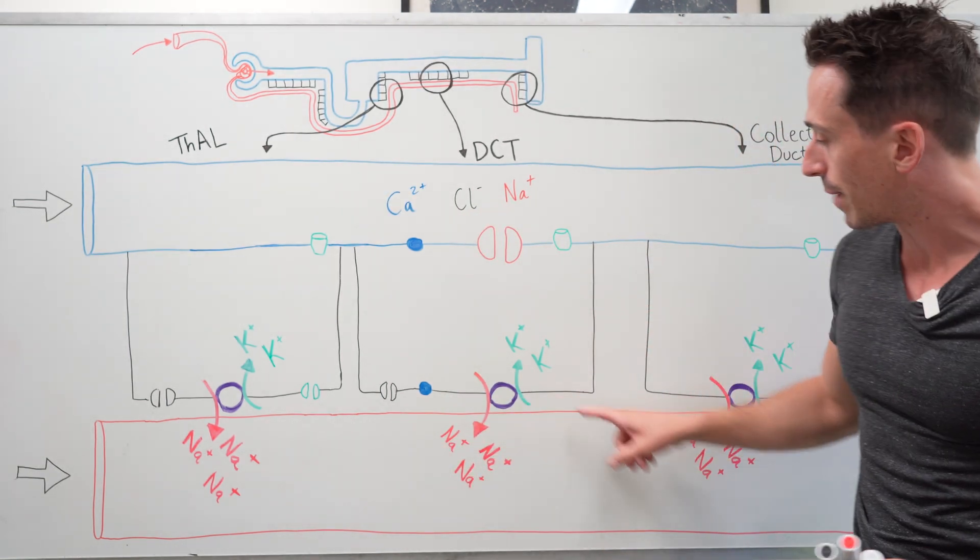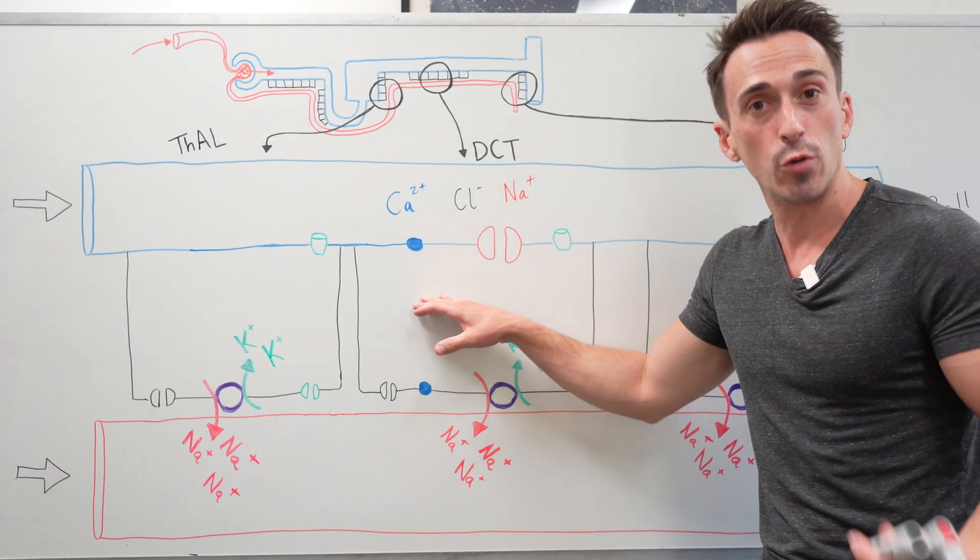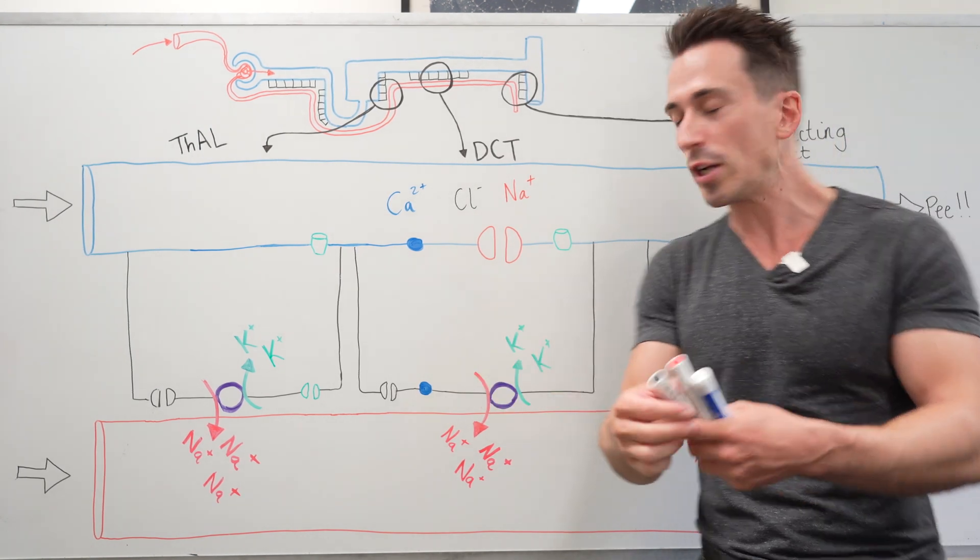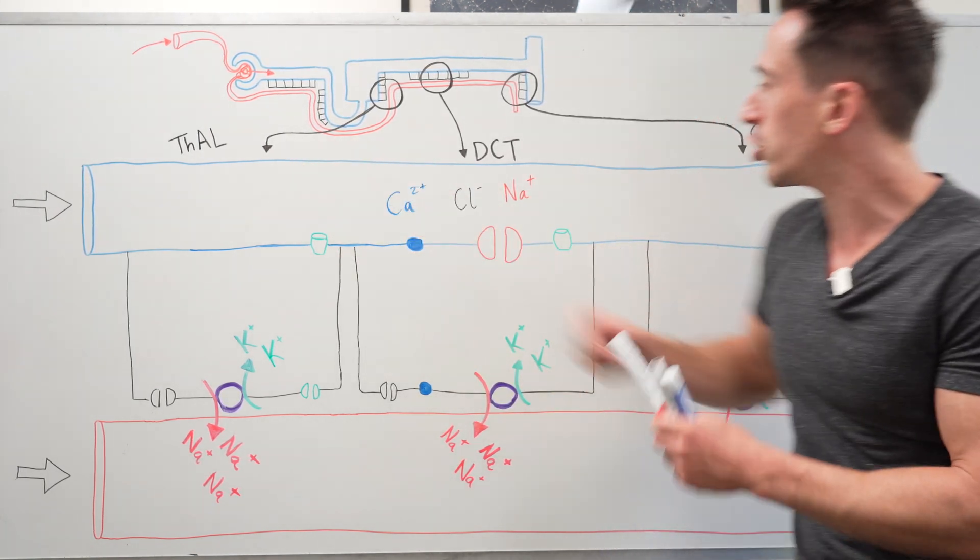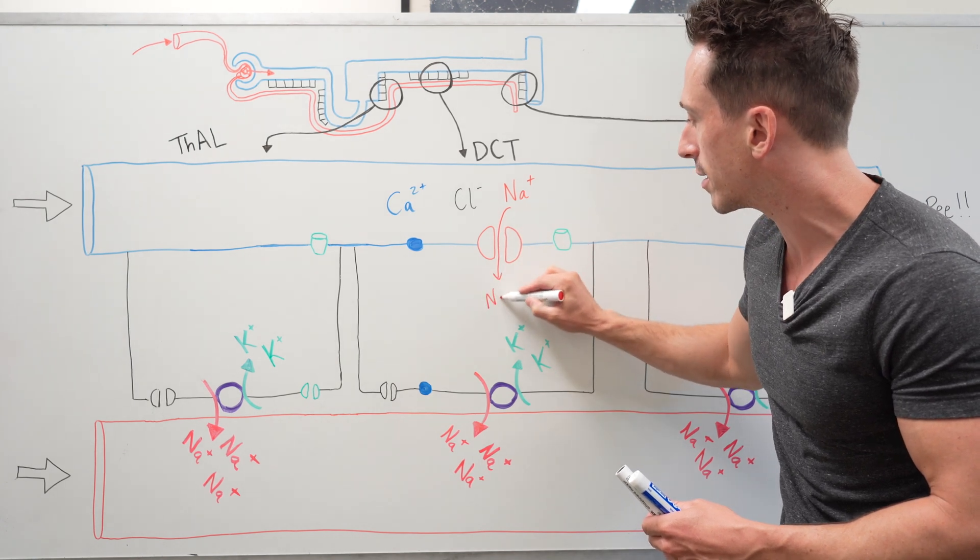And takes potassium from outside the cell and throws it into the cell. So this means that this cell is void of sodium which means there's now a concentration gradient and the sodium that's in the tubule can actually move down its concentration gradient and go into the cell.